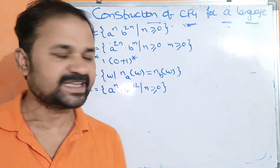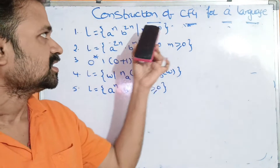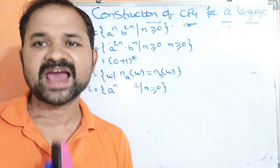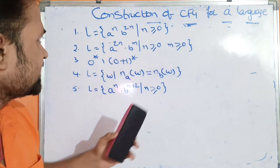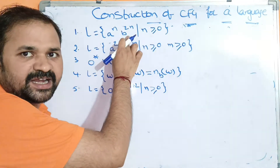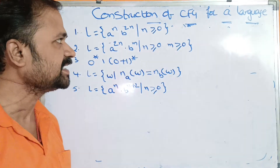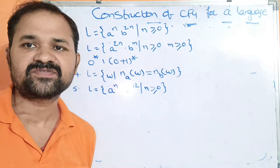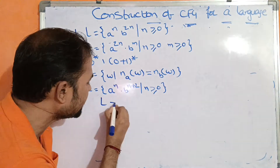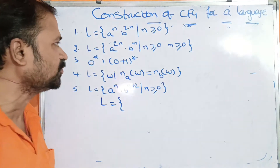Now, let us see these 5 examples — construction of CFG for a language. Let us see the first example. L is equal to a power n, b power 2n, such that n is greater than or equal to 0. So here the language L starts from n=0.